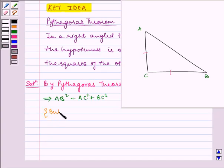But BC is equal to AC, given as triangle ABC is an isosceles triangle.